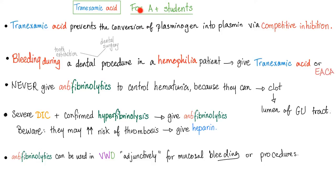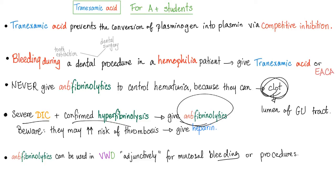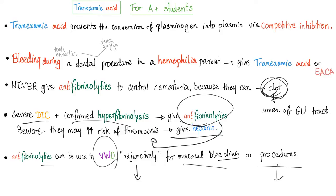From the previous video on tranexamic acid: it inhibits the conversion of plasminogen into plasmin via competitive inhibition. Bleeding during a dental procedure in a hemophilia patient warrants use of tranexamic acid or aminocaproic acid. Never give anti-fibrinolytics for controlled hematuria — it doesn't work and can worsen the problem. In severe DIC with confirmed fibrinolysis, give anti-fibrinolytics carefully as it can lead to thrombosis — in that case also give heparin. Anti-fibrinolytics can be used adjunctively in von Willebrand disease to help control mucosal bleeding around procedures.